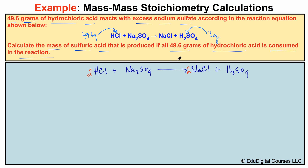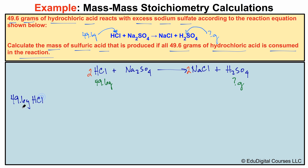Now that we've balanced our chemical equation we can start doing the stoichiometry. In this problem we have 49.6 grams of hydrochloric acid and we want to figure out how many grams of sulfuric acid will be produced. We start with the known quantity: 49.6 grams of HCl.